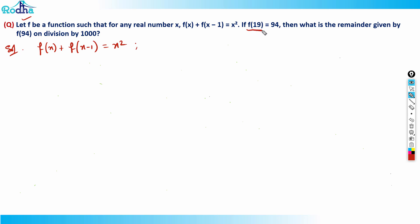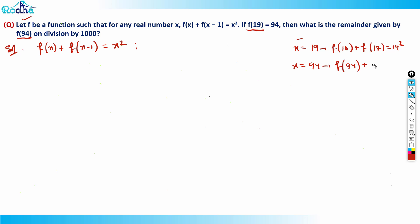If we randomly try putting x = 19, the equation becomes f(18) + f(17) = 19². Or if we put x = 94, we get f(94) + f(93) = 93². We can't relate f(18) or f(17) to f(94) this way. Writing many equations with all plus signs makes it very difficult to cancel terms and cover the gap from 19 to 94.